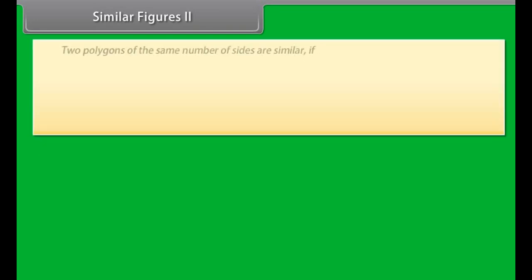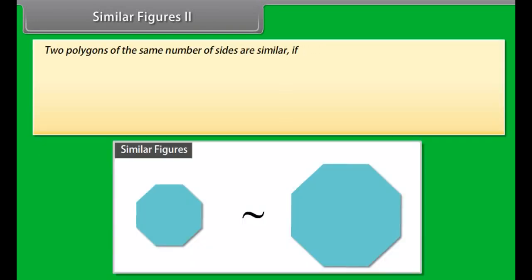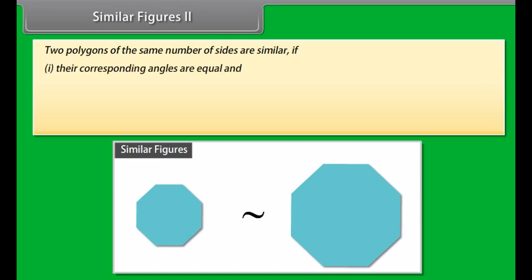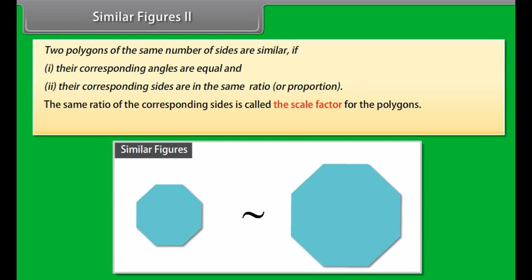Two polygons of the same number of sides are similar if: one, their corresponding angles are equal, and two, their corresponding sides are in the same ratio or proportion. The same ratio of the corresponding sides is called the scale factor for the polygons. All congruent figures are similar, but similar figures need not be congruent.